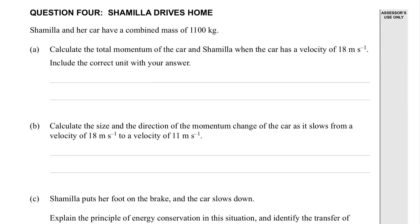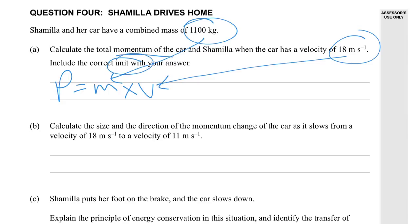2014 Mechanics Question 4. Level 2. Shamila's driving home. Same car as Question 3, 1,100 kilograms. Calculate the total momentum of the car when the car has a velocity of 18 meters per second. So momentum is mass times velocity. That mass, that velocity. And a correct unit is going to be kilogram meters per second. Kilogram from the mass, meters per second from the velocity.